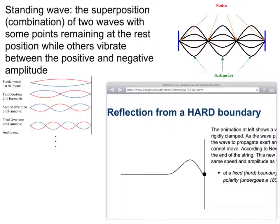The reflected wave and the wave going towards the barrier add together via superposition, giving you some points with no amplitude at all — always destructive interference. Those are called nodes in a standing wave. Then you have other points that alternate between maximum amplitude whenever you have, say, two ups — constructive interference — and nothing whenever you have an up and a down — destructive interference. It alternates between positive and negative amplitude.